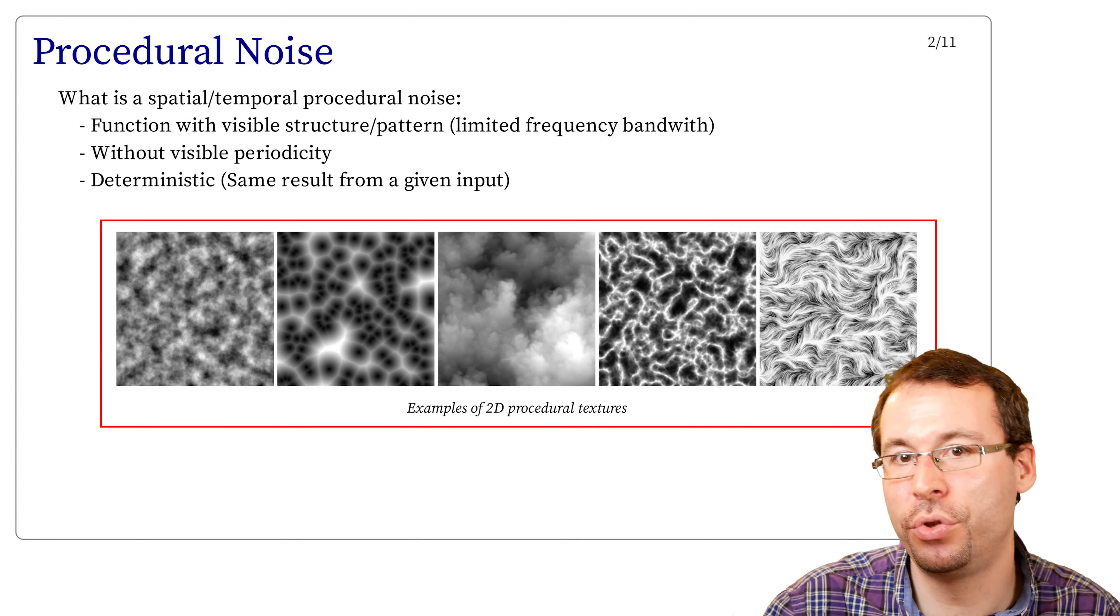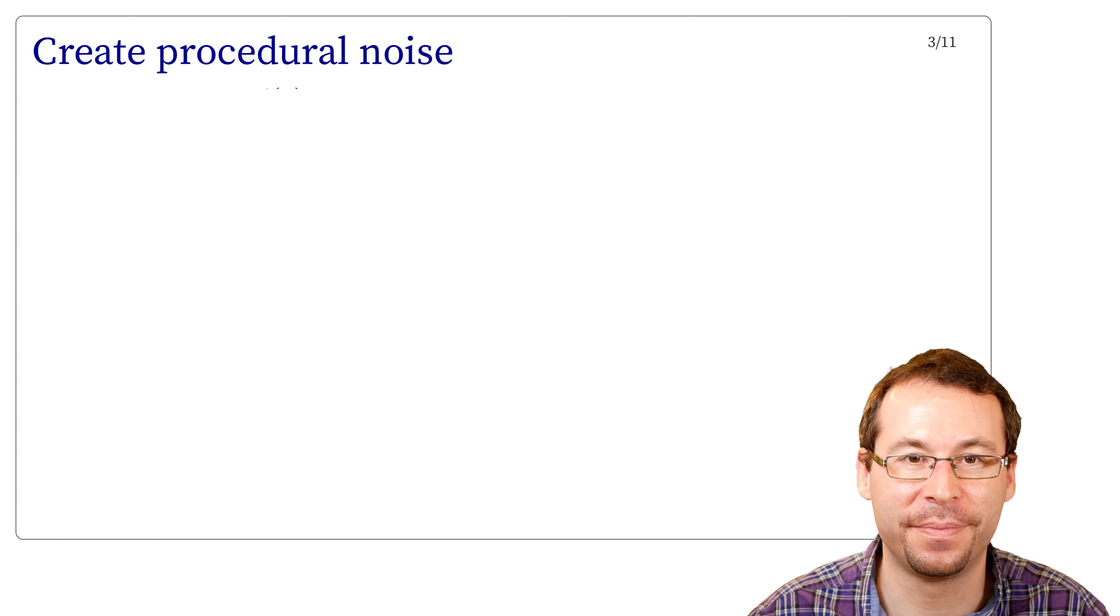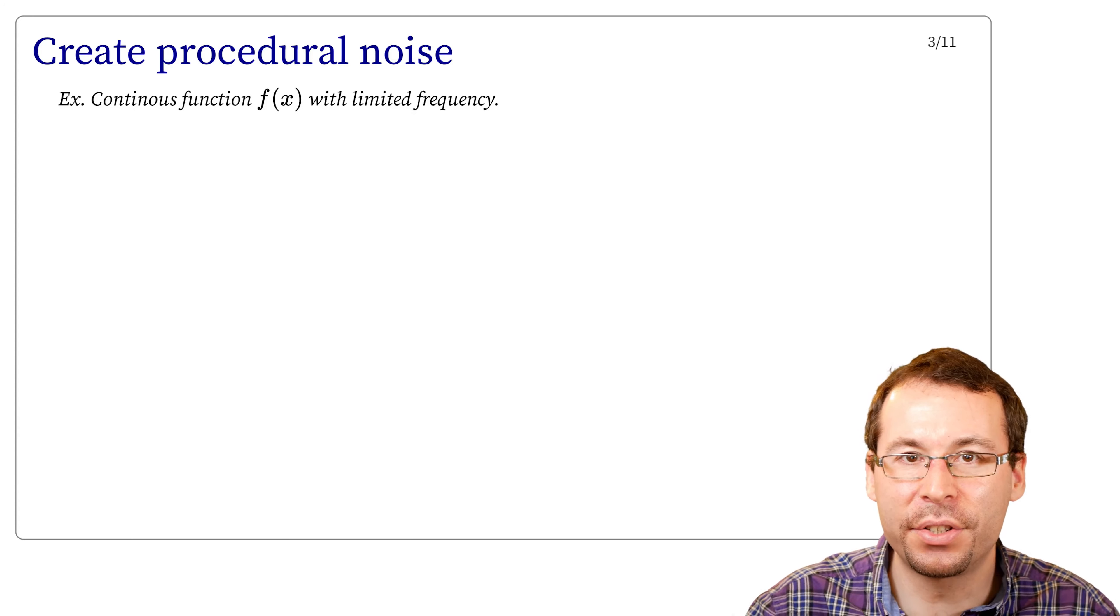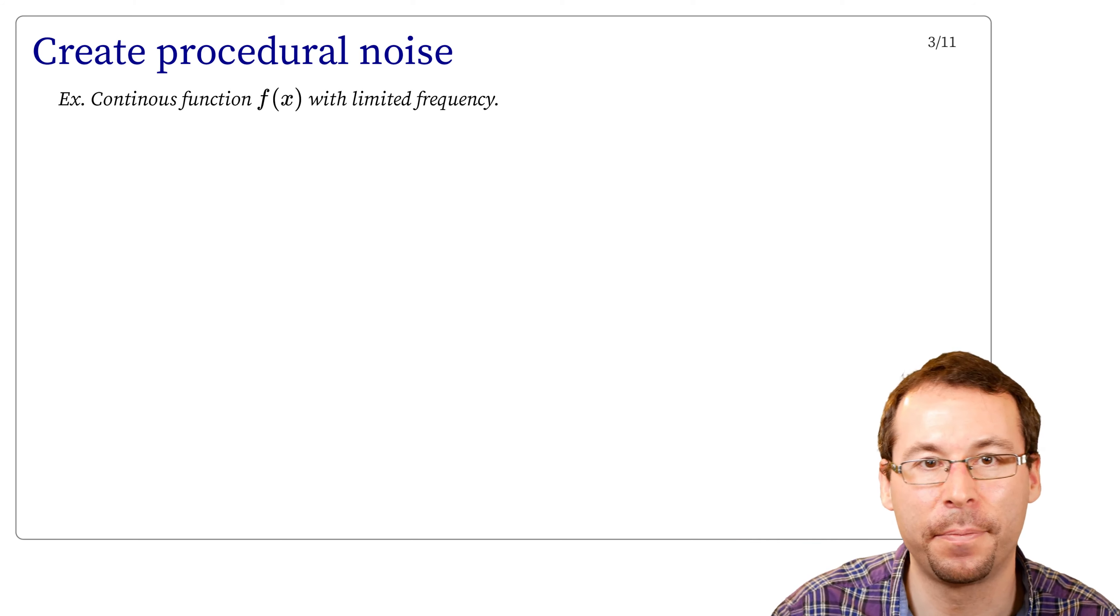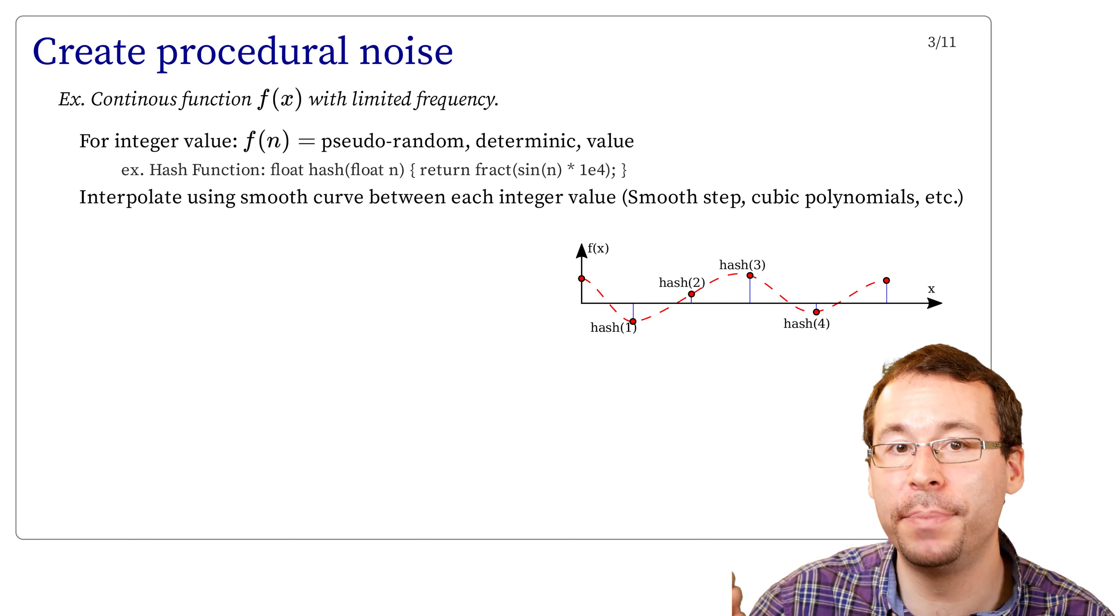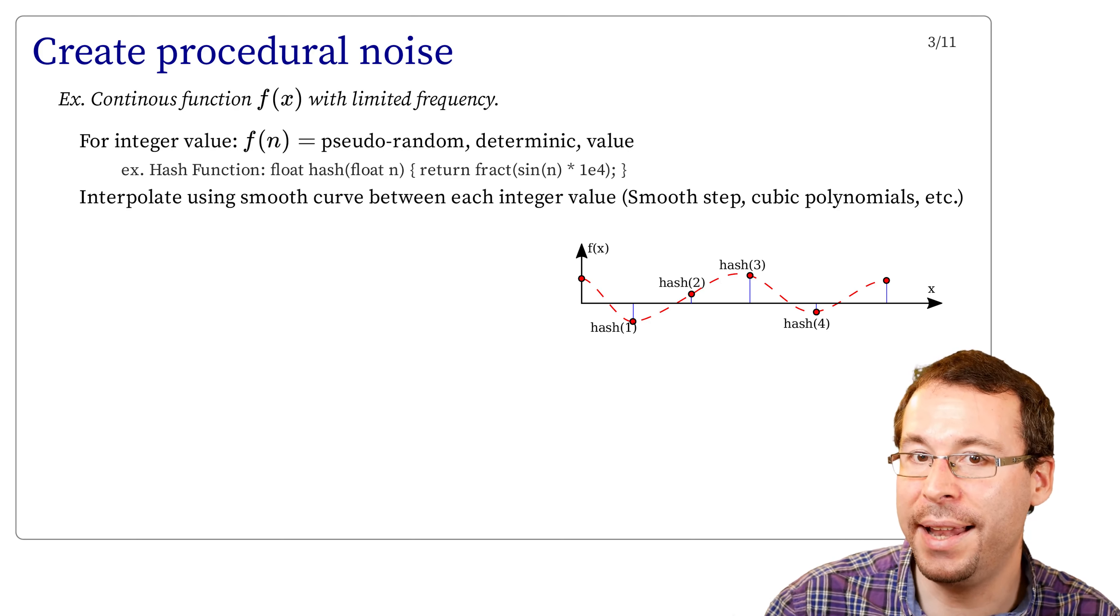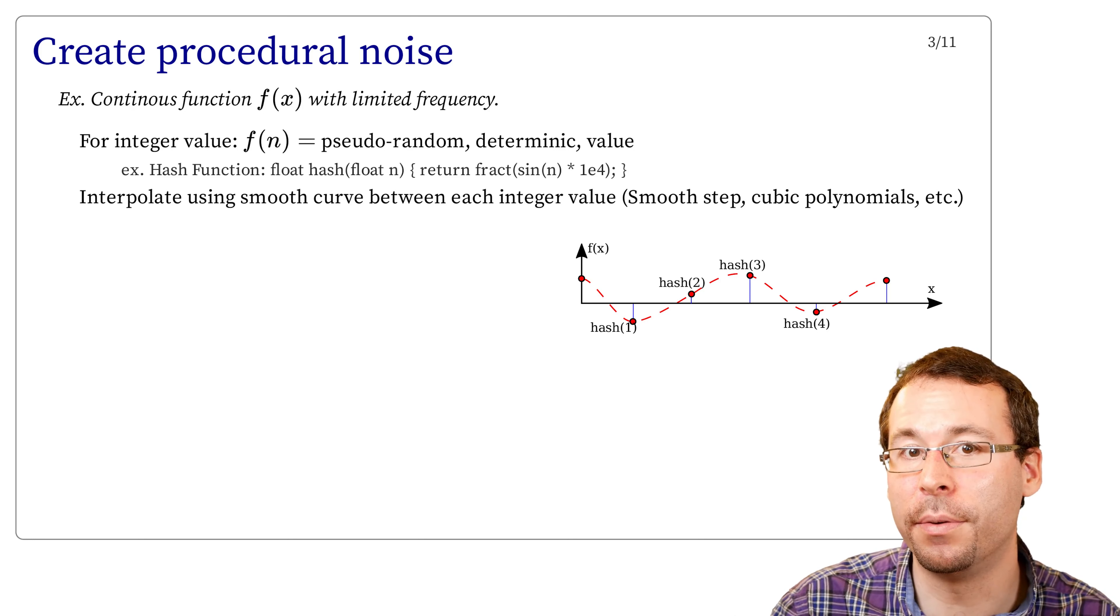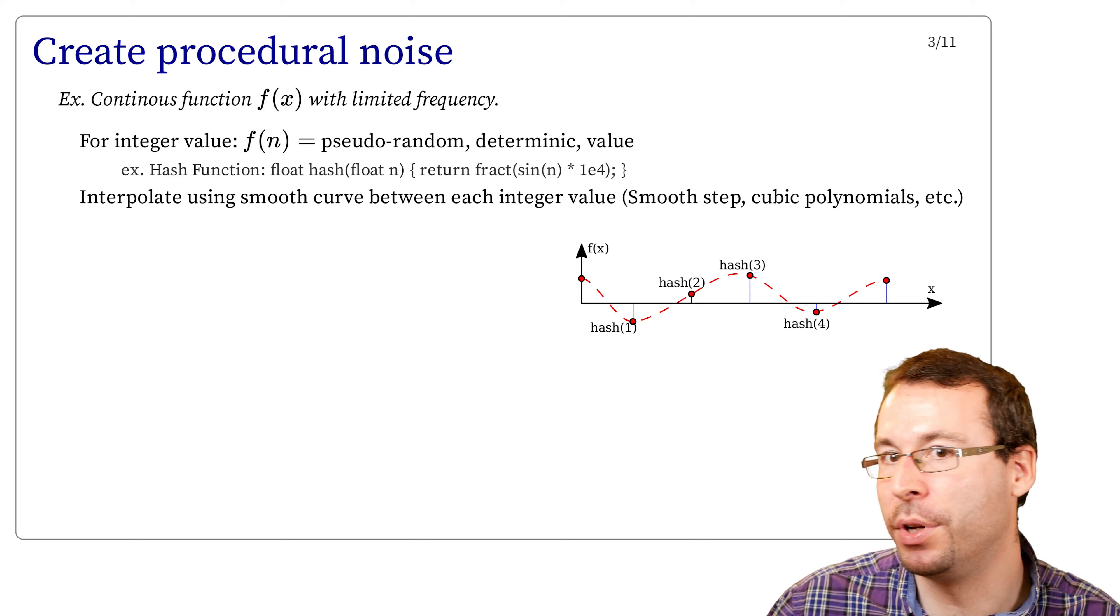And here is a set of noise used to generate 2D textures, which is a common application, although the use of noise has a wider application. So now, how can we create such procedural noise? Let us consider the objective for creating a continuous function f(x) with limited frequency. For integer values, f(n) is a pseudo-random, deterministic value. For instance, we can consider the value of f given by a hash function, that takes as input n and output a pseudo-random number.